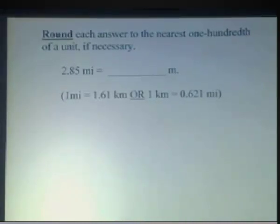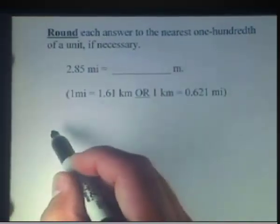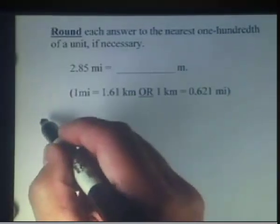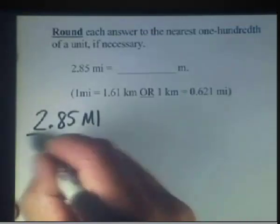Notice that we have only a conversion factor of miles to kilometers here. So let's set this up and see how we can dance around our unity fraction. As before, we're going to start our fraction, 2.85 miles all over 1.